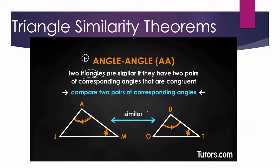Angle A corresponds to angle Q, and based on the markings they are congruent. And also, we have angle M and angle T. So we have two pairs of corresponding angles that are congruent. By AA similarity, we can say that triangle AJM is similar to triangle UOT. That is the AA similarity theorem.